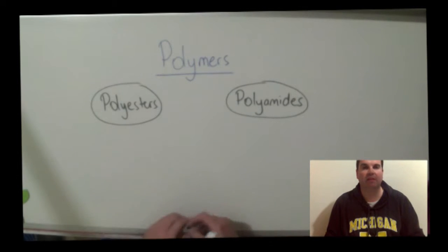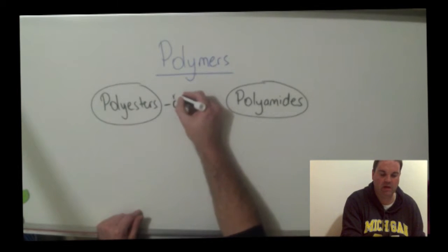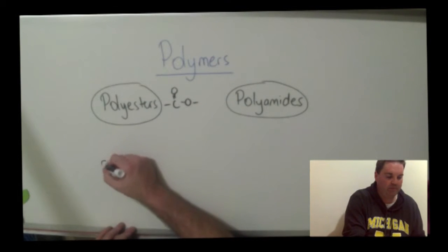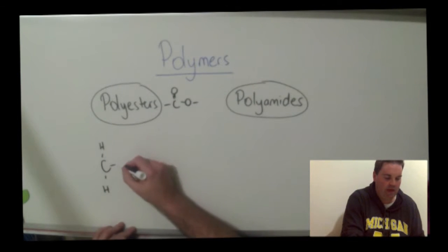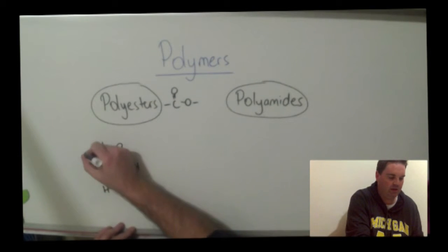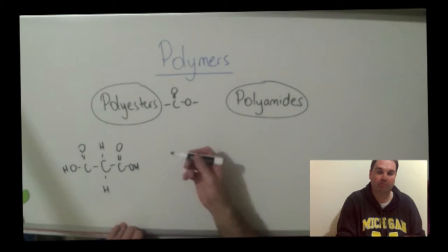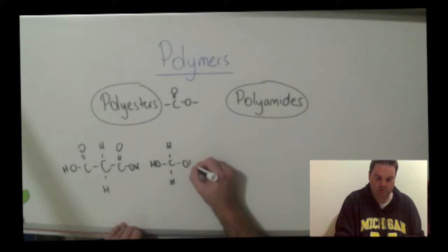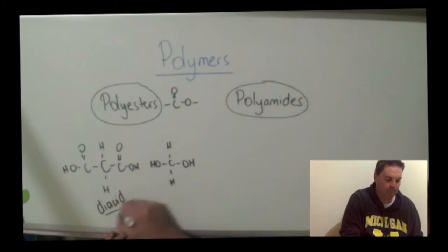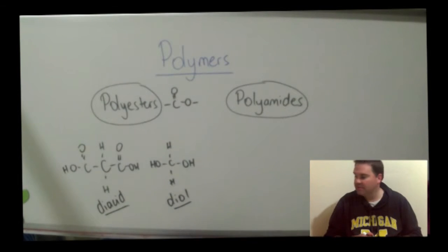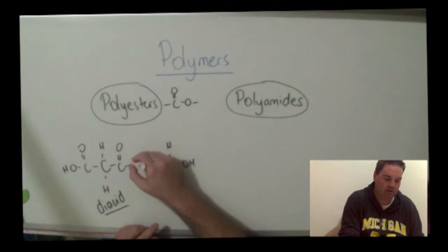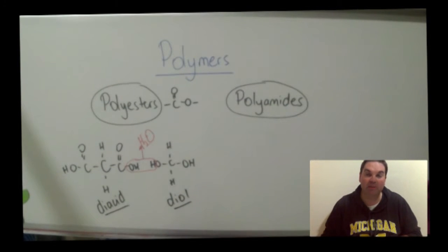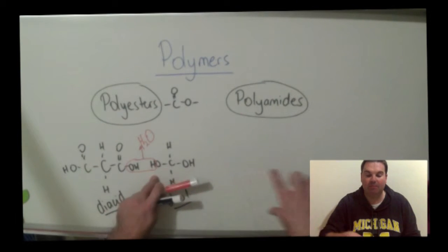So I'm going to start with polyesters. Polyesters have the ester functional group in them — carbon double bond oxygen and single bond oxygen. They normally come from two different monomers: one has a carboxylic acid group on each end, which we call a diacid, and the other has two alcohol groups on it, which is a diol. It's this combination of the alcohol and the carboxylic acid where we eliminate a water molecule and form our ester. It's really important that you have a functional group on either end of your monomers, because that way you can keep adding them on.